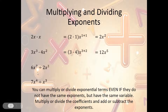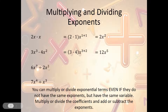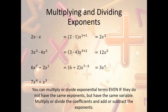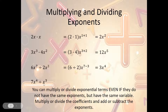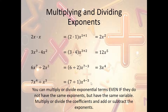Division is just the opposite — we divide the coefficients and subtract the exponents. So 6x⁷ divided by 2x³: divide coefficients 6 divided by 2 is 3; subtract exponents 7 minus 3 is 4 — giving us 3x⁴. For 7x⁴ divided by x³: divide 7 by 1 is 7; subtract exponents 4 minus 3 is 1 — and since it's the first power, we don't need to write the exponent, so it's just 7x.